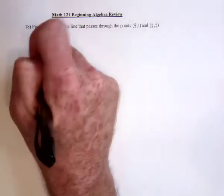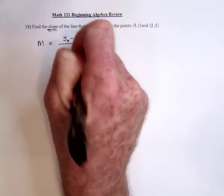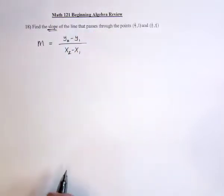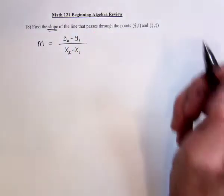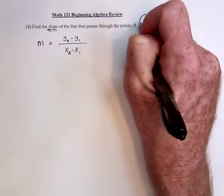So for slope, you subtract the two y-values, y2 minus y1 over x2 minus x1. Or another way to look at it is you subtract, and I'm going to subtract in this direction.